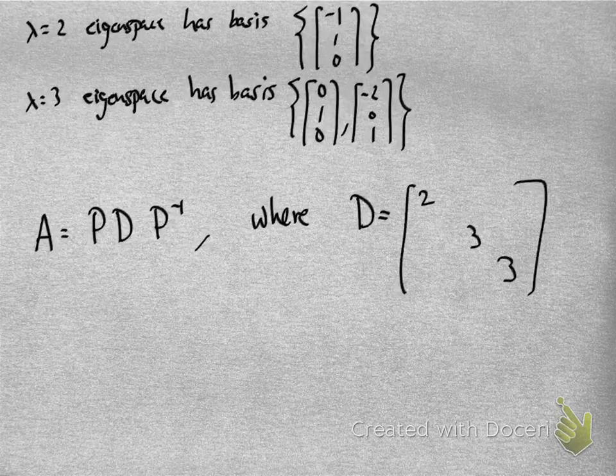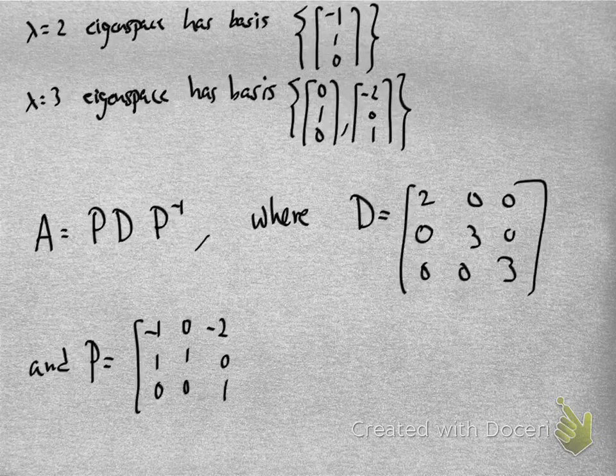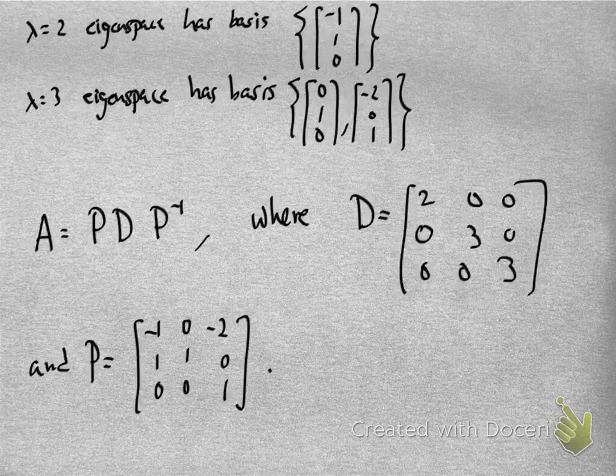This tells me that by the diagonalization theorem, I can write A as P times D times P inverse, where D is this diagonal matrix with 2, 3, 3 on the main diagonal. For P, the important thing is that since I listed eigenvalue 2 first in D, I need to put the eigenvector corresponding to eigenvalue 2 first — so I put [-1, 1, 0] as the first column. Then I list the basis for the lambda equals 3 eigenspace: [0, 1, 0] and [-2, 0, 1] as the remaining columns of P.